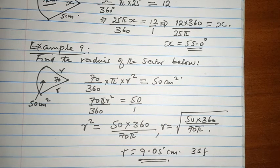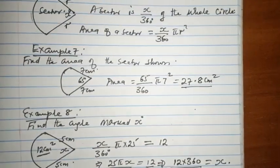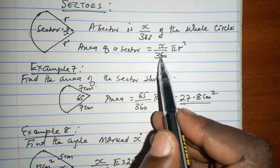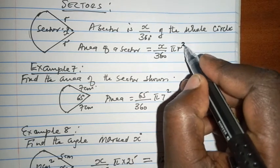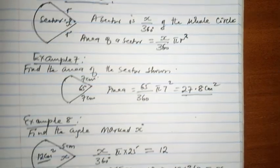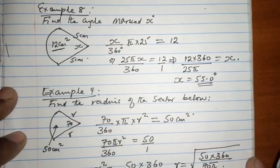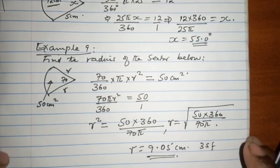We have been able to find the angle, the radius, and the area of a sector using the same approach, that the area of a sector is x over 360 pi r squared. This has given us how to approach and calculate the radius, the area, and the angle at the center.